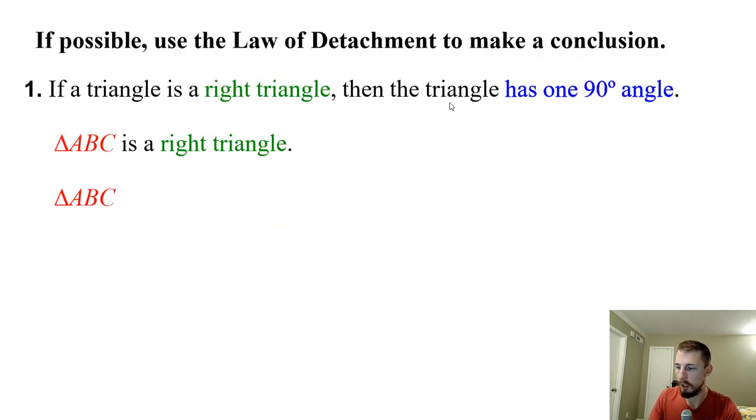All right, so that was it. The lecture, about 15 minutes, not too bad. Let's go right into the assignment. So if possible, use a law of detachment to make a conclusion. So our premise is if a triangle is a right triangle, then it has one right angle. Then they tell us that triangle ABC is a right triangle. So what can we conclude about triangle ABC? Triangle ABC has one 90 degree angle.